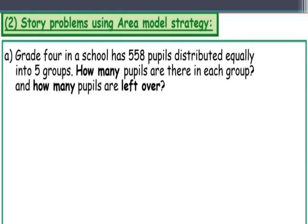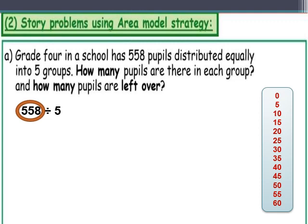Let's take another example — a story problem. Grade 4 in a school has 558 pupils distributed equally into 5 groups. 'Distributed equally' means division. How many pupils are in each group, and how many are left over? 'Left over' means remainder. The equation will be 558 divided by 5. To use the area model, first decompose the dividend according to the multiples of the divisor. Write the multiples of table 5.